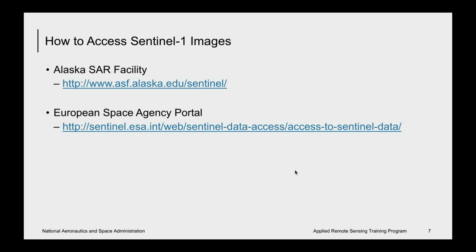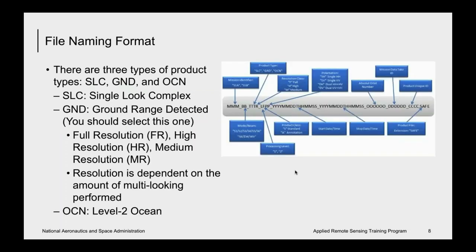There are two ways to access Sentinel-1: one is through the Alaska Satellite Facility, and the other is through the European Space Agency's Copernicus portal. For both, you have to register in order to log in, but once you register, the data access is free.